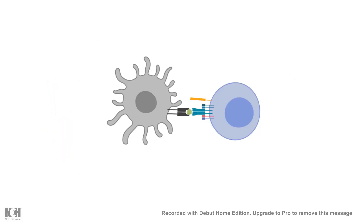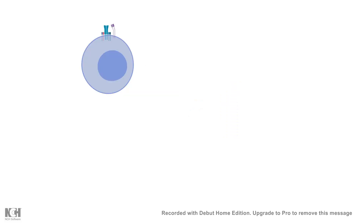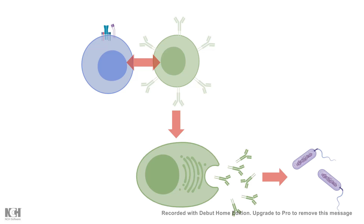Let's go back to the situation where our body is invaded by a pathogen. Dendritic cells, macrophages, or other antigen-presenting cells engulf the pathogen, process its antigens, and display them on class II MHC molecules, which are recognized by CD4-positive T helper cells. The CD4-positive T helper cell interacts with B cells, leading to B cell activation. The B cell then differentiates into antibody-secreting plasma cells, and these antibodies neutralize the pathogen and protect the body.